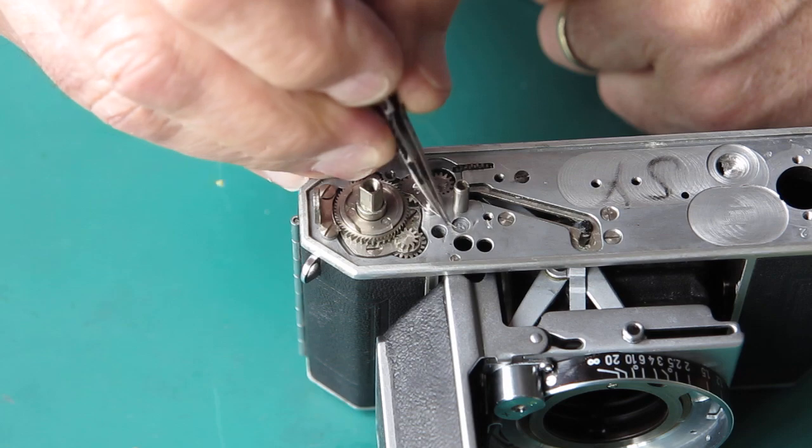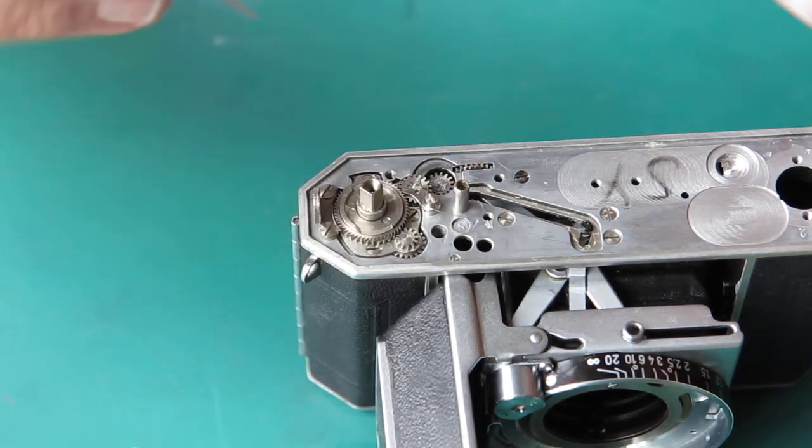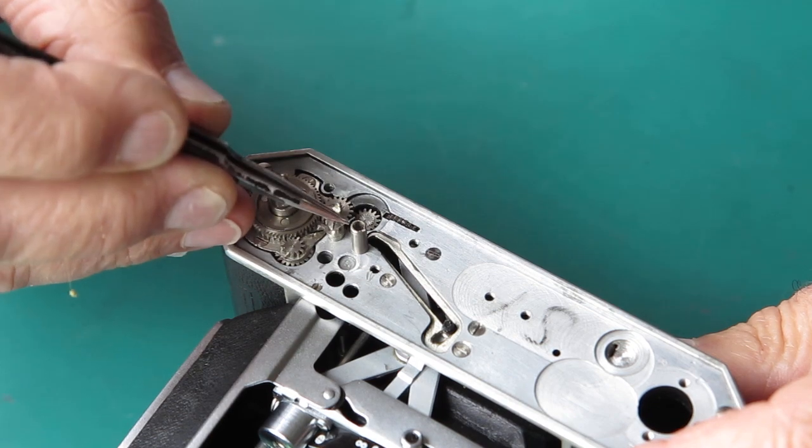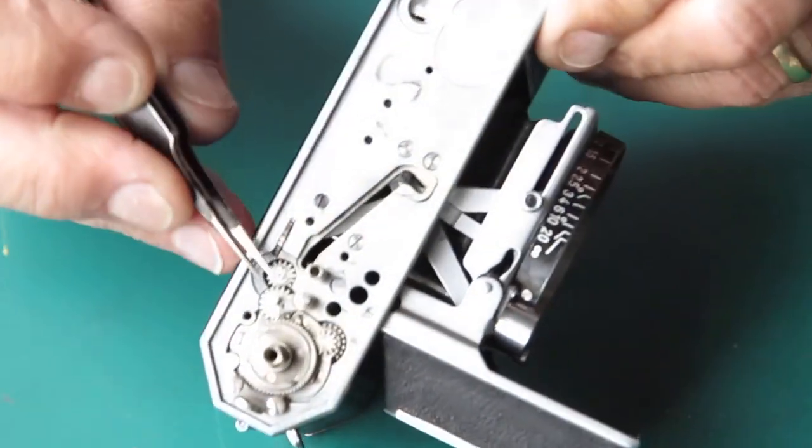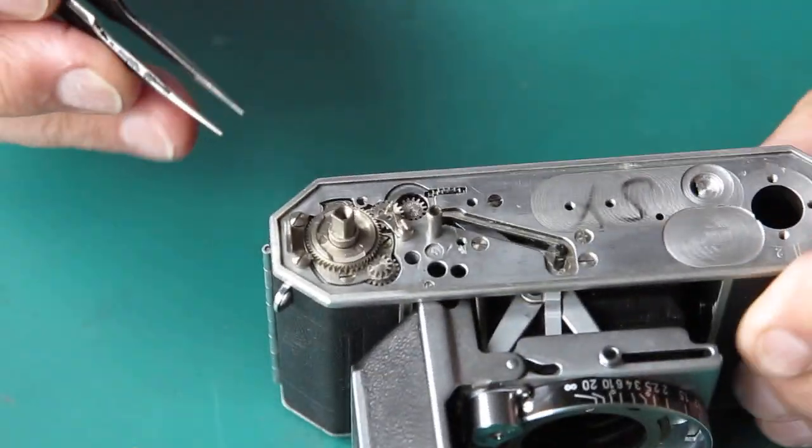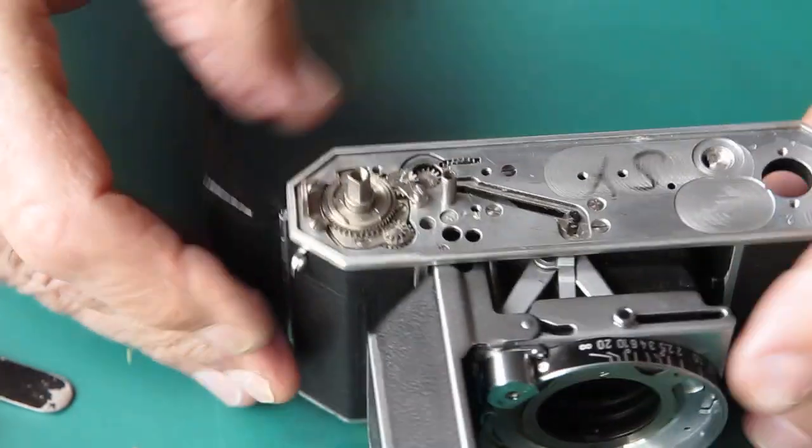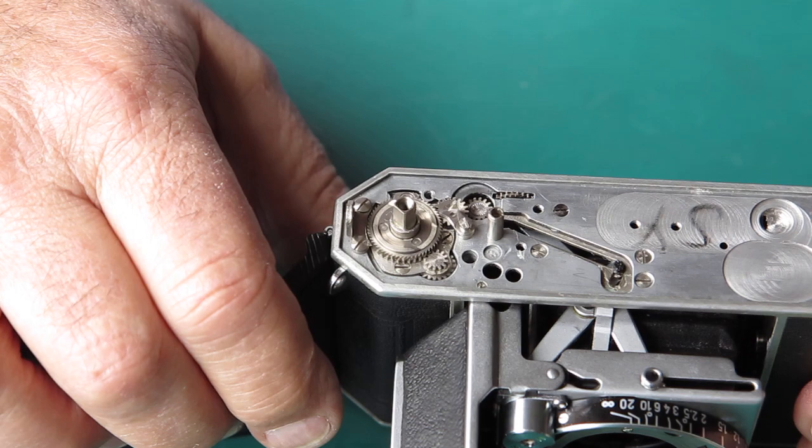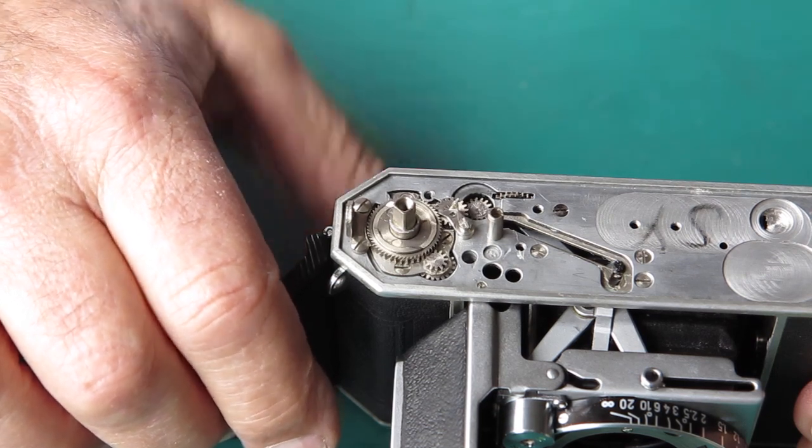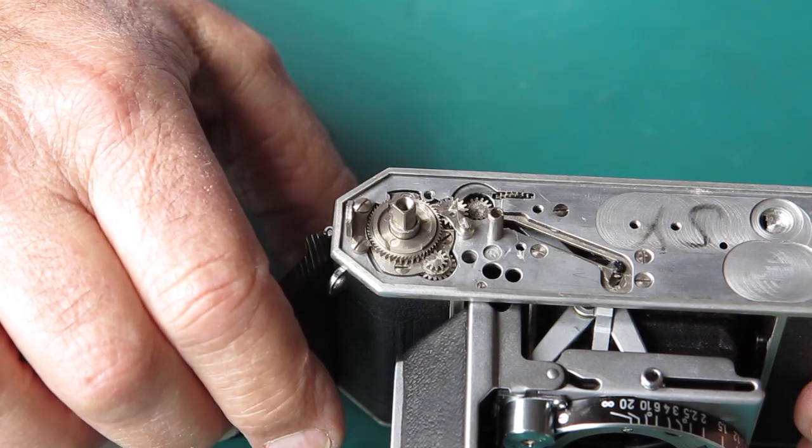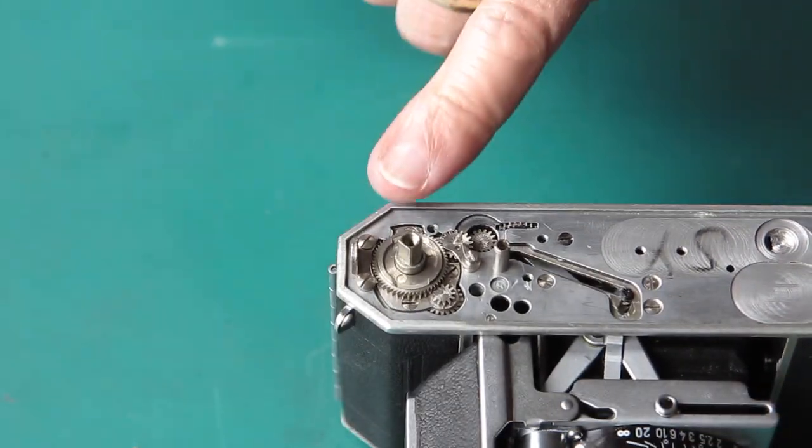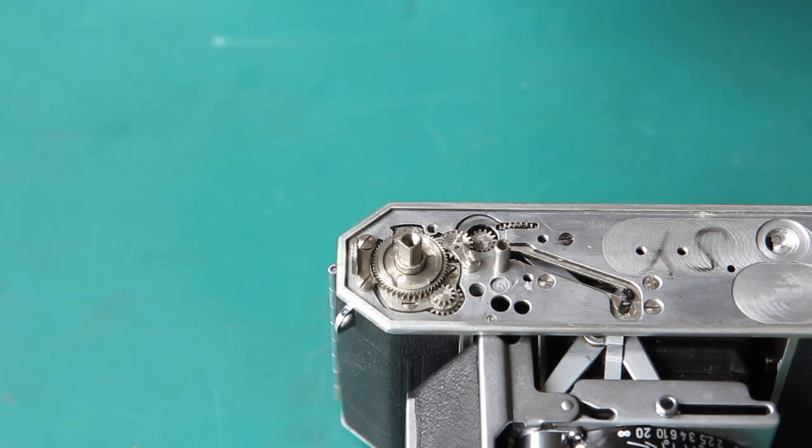So there's a little return spring for the ratchet pawl. I need to hook that behind the post. Make sure that's sitting in its notch. And there you'll see the ratchet pawl acting as I roll the spool forward with my thumb. So that's doing its job. It stops that whole business from being able to back up.